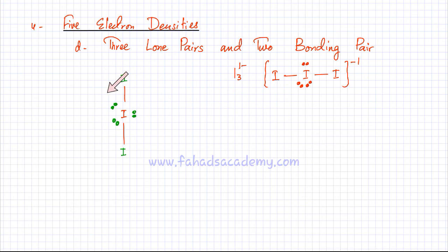The three electron densities in the middle, these lone pairs, would try to keep as far away from each other as possible. But they're not going to affect the position of these bonds. So the shape of this molecule is going to be called linear, and the angle would be 180 degrees.